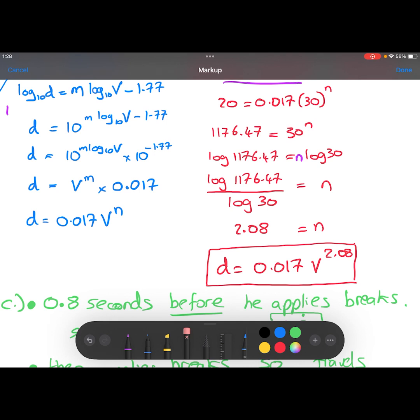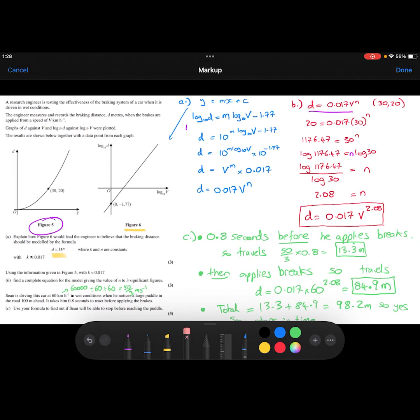So we've now got our full equation of the model, which is d equals 0.017 times V to the power of 2.08. Moving on to part C.